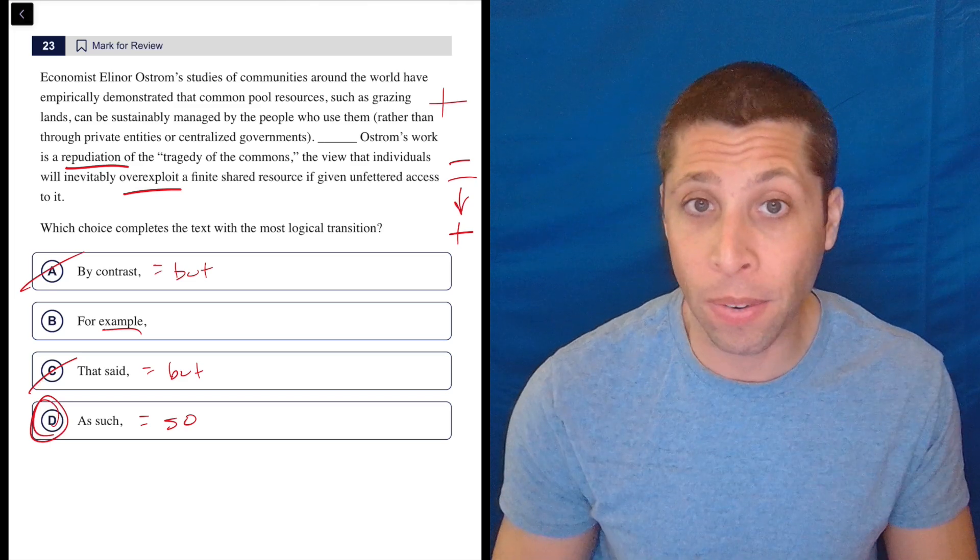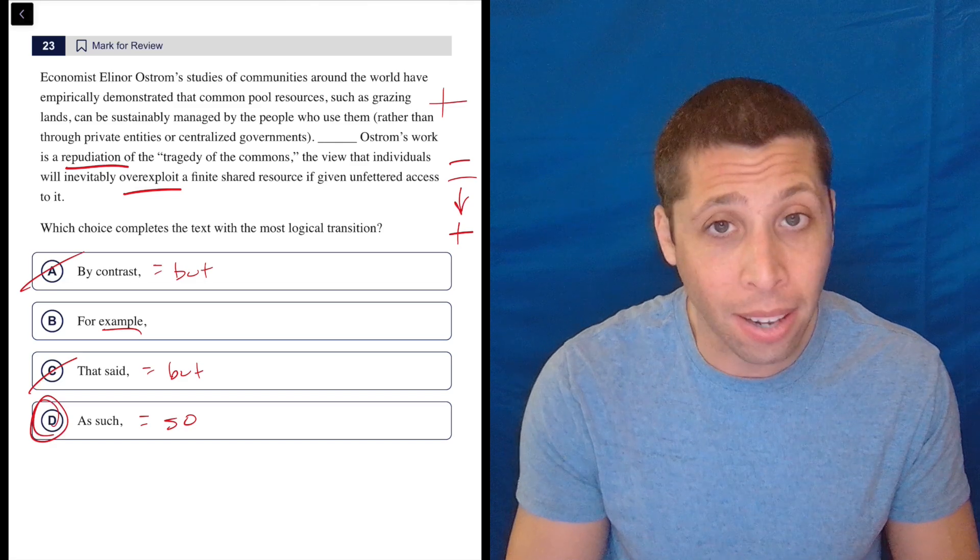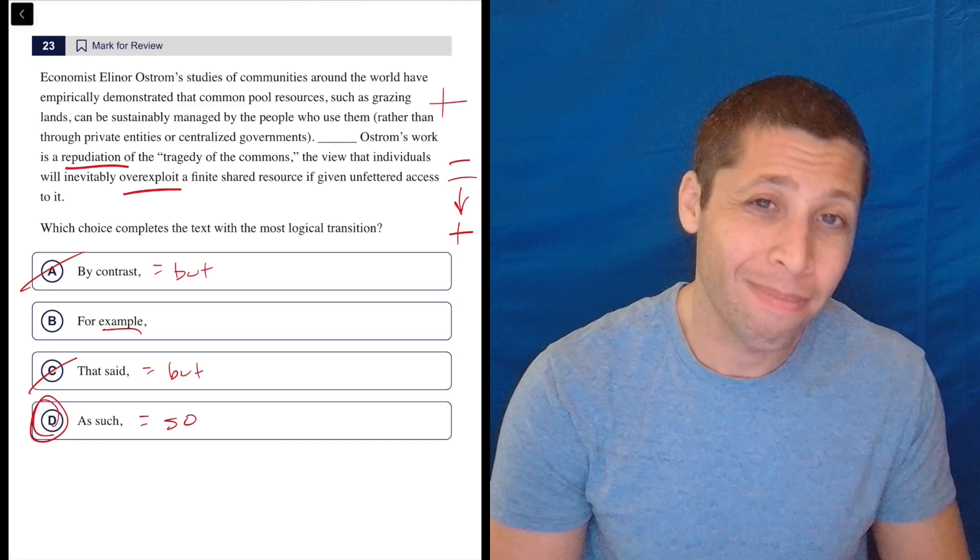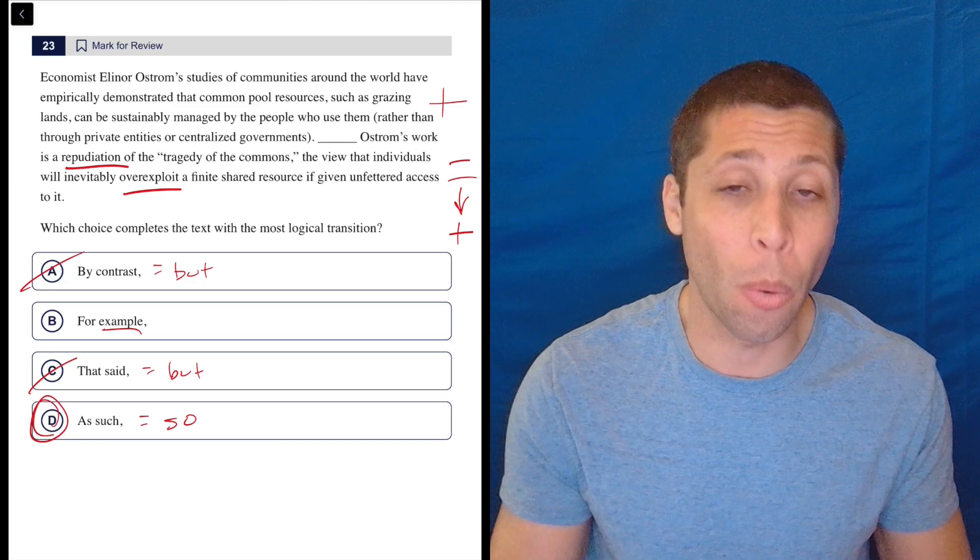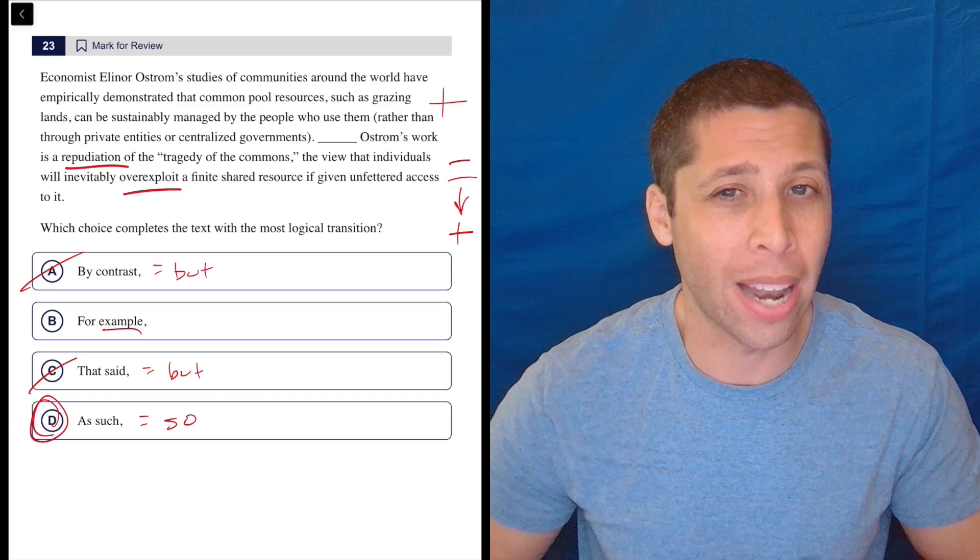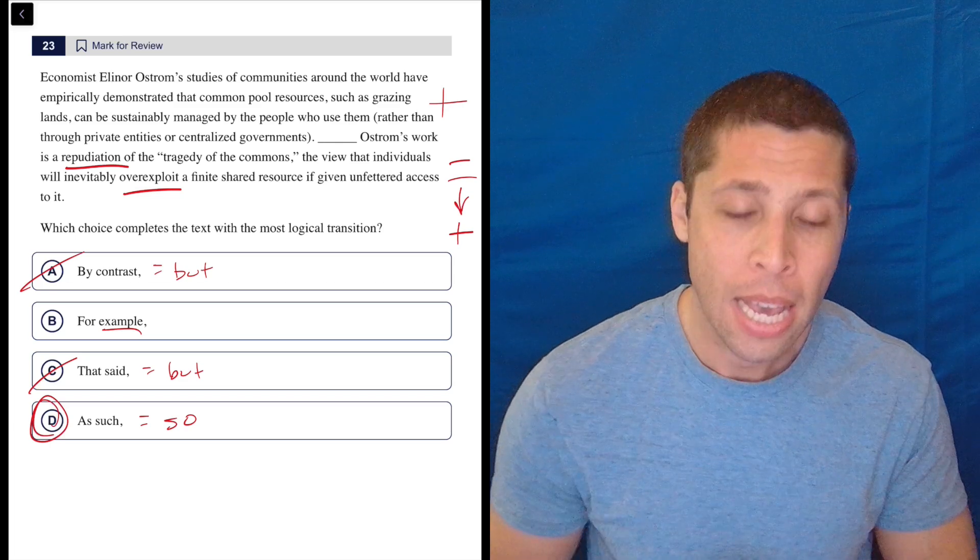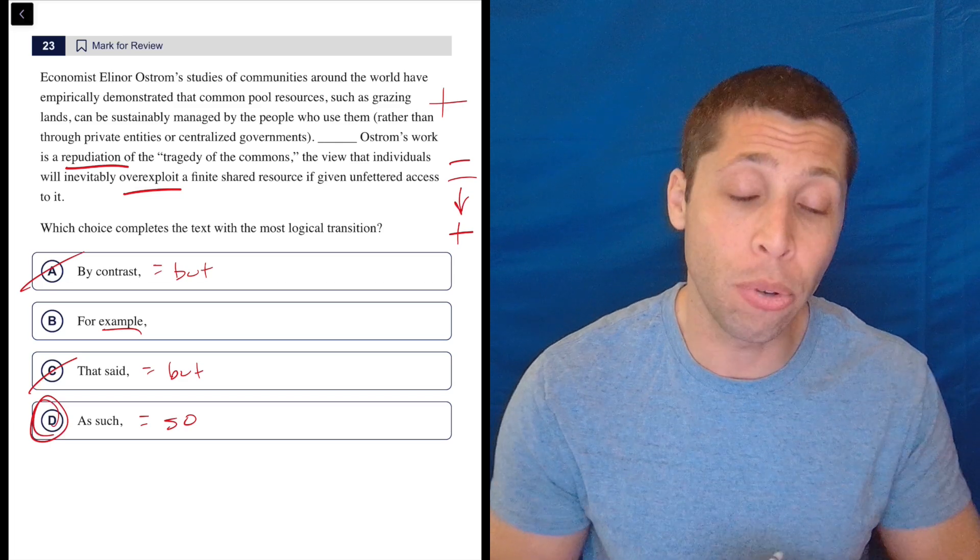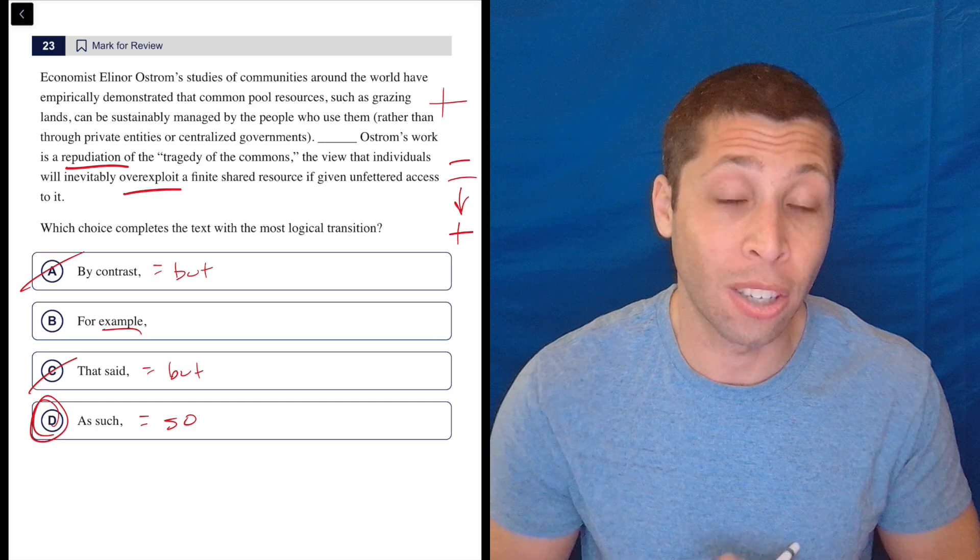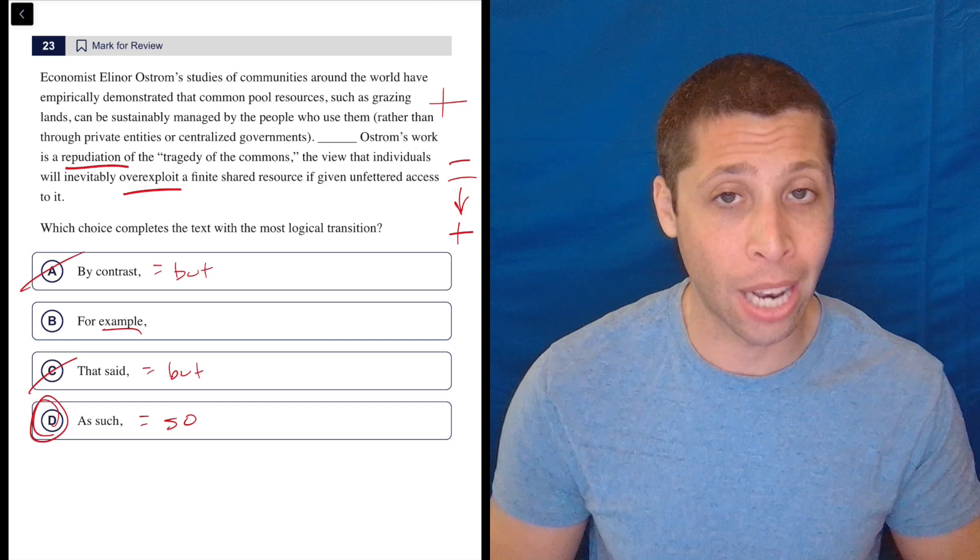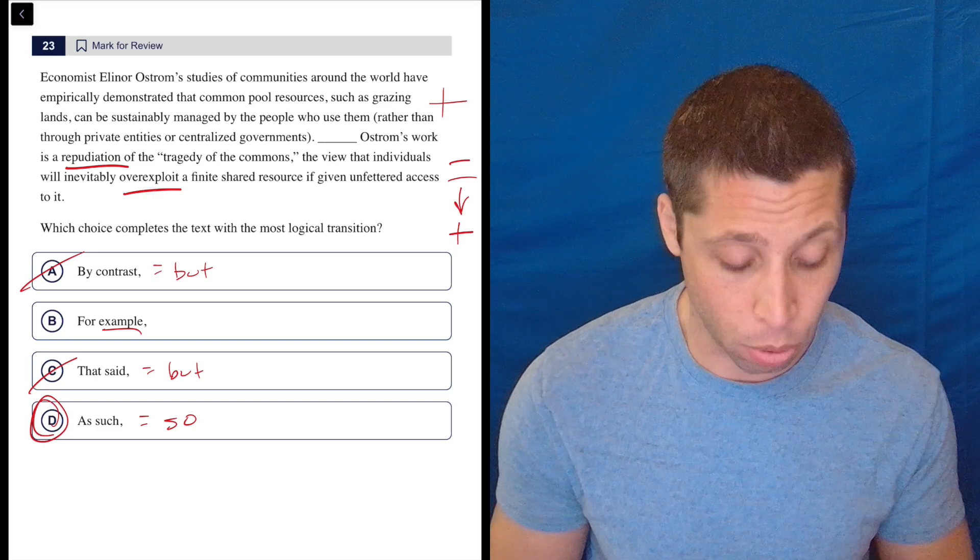And now I've got a 50-50 choice. I'm really just asking, is this an example? It is not. Is it a cause and effect? In a weird way. I think when I put the word so in, I feel that it makes sense rather than actually thinking about it as a cause and effect. But that's really it. The strategy is so useful for these transition questions. And it all starts with just memorizing the words and being able to quickly categorize them into our main four categories.